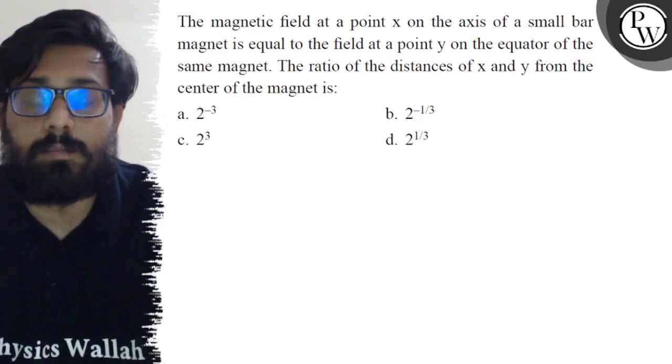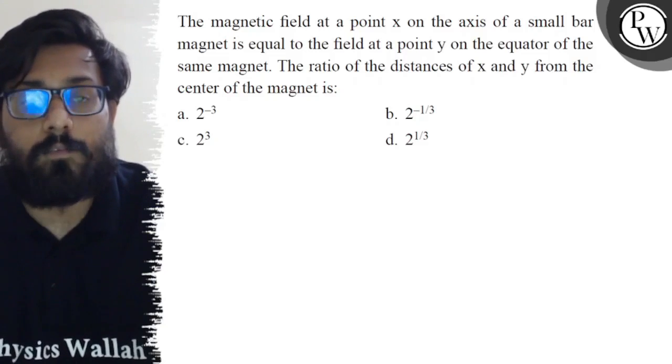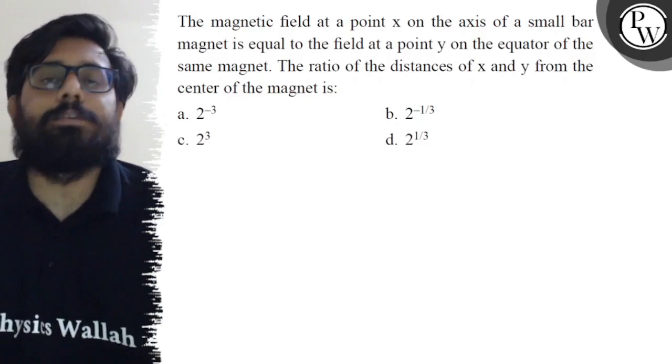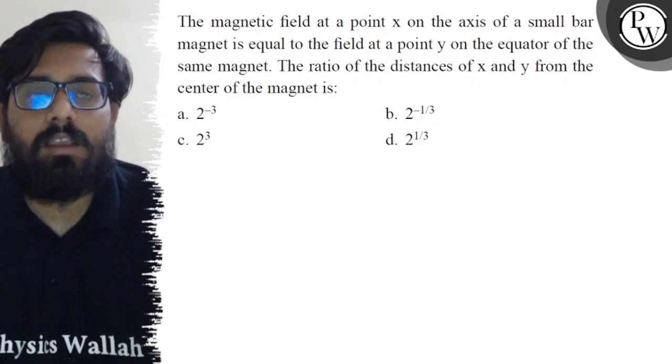The ratio of the distances of x and y from the center of the magnet is: first option is 2^(-3), second option is 2^(-1/3), third option is 2^3, and the fourth option is 2^(1/3).